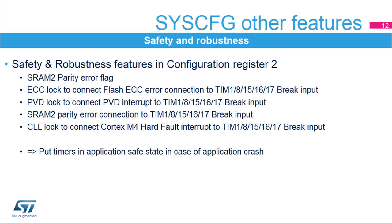The system configuration register 2 contains control and status bits linked to safety and robustness, such as the SRAM2 parity error flag and control bits to direct some error detection events to the timer's brake inputs. This allows timer outputs to be placed in a known state during an application crash. Once programmed, the connection is locked until the next system reset. These internal events include a flash error code correction event, a power voltage detector event, SRAM2 parity error event, and the Cortex-M4 hard fault.